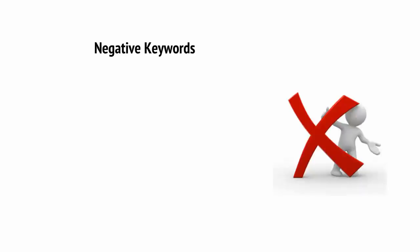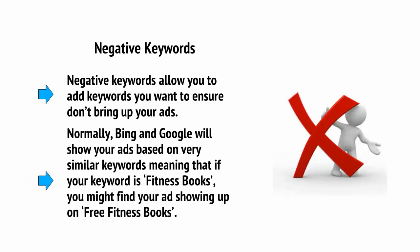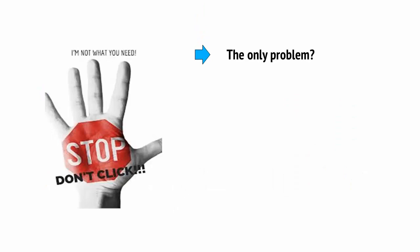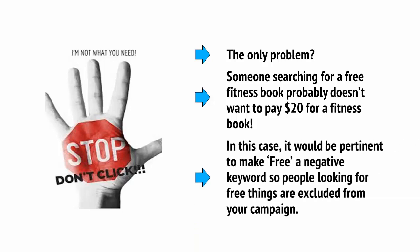There are numerous advanced features and options you can tweak to get the very most out of your ads, and these can make a big difference to your campaigns and your profits. For example, there are negative keywords, which allow you to add keywords that you want to ensure don't bring up your ads. Bing and Google will show your ads based on very similar keywords, meaning that if your keyword is 'fitness books,' you might find your ads showing up on 'free fitness books.' Someone searching for a free fitness book probably doesn't want to pay $20 for one, so it would be pertinent to make 'free' a negative keyword so that people looking for free things are excluded from your campaign.